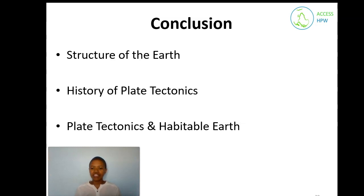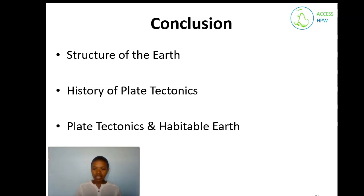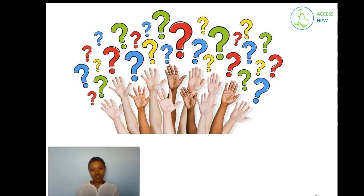In summary, we learned that the earth is round on the outside and has a crust, mantle, and core on the inside. Alfred Wegener developed the theory of continental drifting and provided evidence for it. Arthur Holmes explained how and what causes the plates to move. Finally, the distribution of land, formation of rocks, and formation of greenhouse gases through volcanic eruptions all make the earth habitable — and that is how plate tectonics contributes to making the earth habitable. Thank you so much for your time. Do you have any questions?